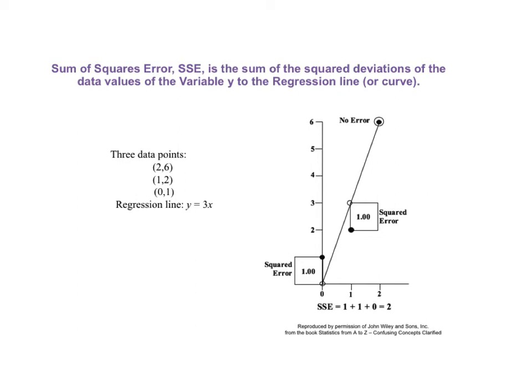Sum of squares error, SSE, is the sum of the square deviations of the data values of the variable y to the regression line or curve. In this very simple example, there are only three data points in our sample. These are illustrated by the three black dots. Reading from the top down, the data points have x, y values of x equals 1 and y equals 6, and then x equals 1 and y equals 2, and then x equals 0 and y equals 1. The regression line is defined by the formula y equals 3x. There is no error for the point at the top, 2 comma 6. It is on the regression line of y equals 3x. The black dots of the other two points, 1, 2 and 0, 1, are each one unit away from the regression line. So their error is 1 and their squared error is also 1. And the sum of these squared errors, SSE, is 0 plus 1 plus 1 which equals 2.